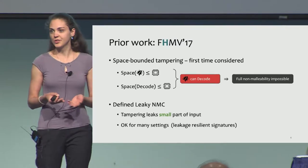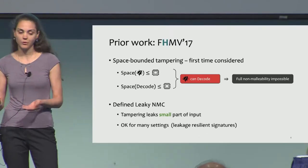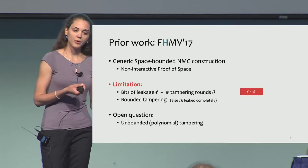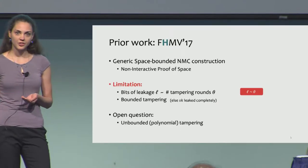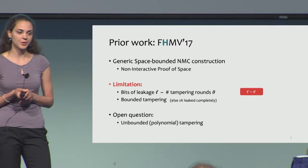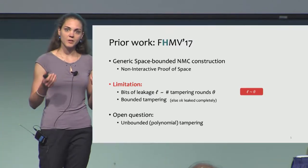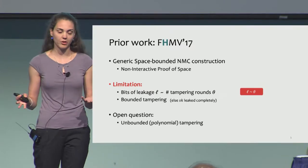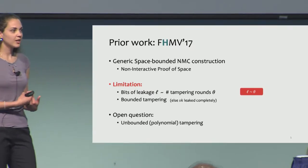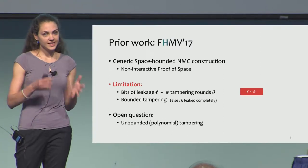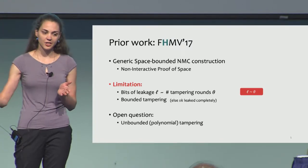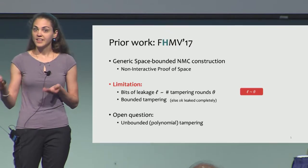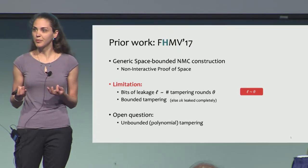So to this end, a definition of leaky non-malleability was introduced, where it's allowed for the tampering to leak some small part of the input — just a small part. For many applications this is completely fine, for example for leaky-resilient signatures. The prior work introduced a generic construction — a generic space-bounded non-malleable code — and it was based on non-interactive proof of space as the main building block. However, it had one limitation: the size of leakage was growing linearly in the number of tampering rounds, which implies that tampering is a priori bounded.